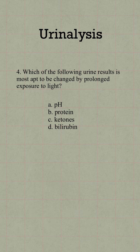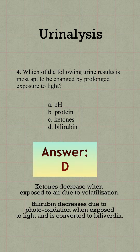Question number 4. Which of the following urine results is most apt to be changed by prolonged exposure to light? The answer is D. Bilirubin decreases due to exposure to light and will be converted to biliverdin.